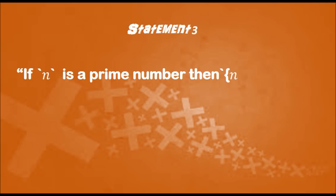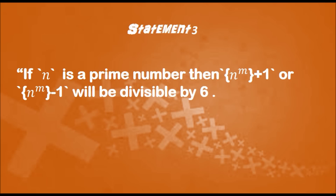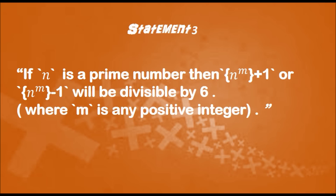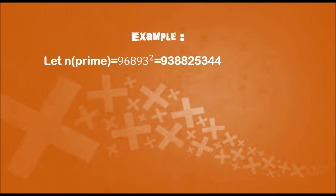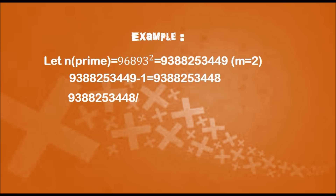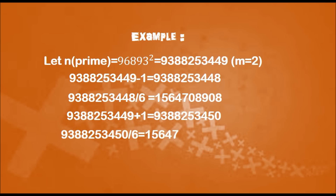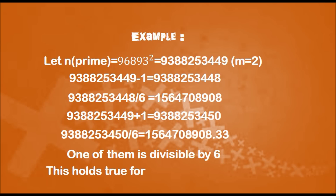Statement 3: If n is a prime number then n raised to m plus 1, or n raised to m minus 1, will be divisible by 6, where m is any positive integer. Example: Let n be the prime 96893 and take m as 2. Hence 96893 raised to 2: subtracting 1 and dividing by 6 gives a whole number; adding 1 and dividing by 6 gives a decimal number. One of them is divisible by 6. This holds true for all prime numbers.